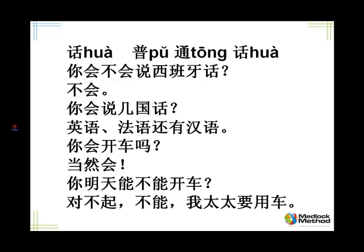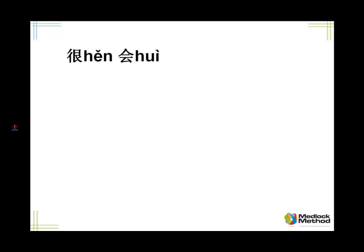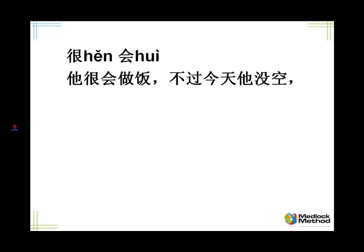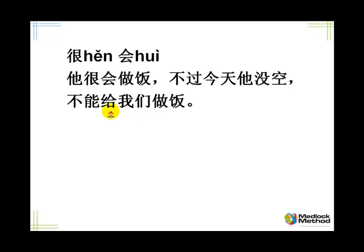Now we want to look at another use of 会 — to say that you're very good at something, you say 很会. Tell me: he's very good at cooking, but he doesn't have time today, he can't cook for us. 她很会做饭，不过今天她没空，不能给我们做饭. 给我们做饭 is cook for us — similar to 给我们打电话.